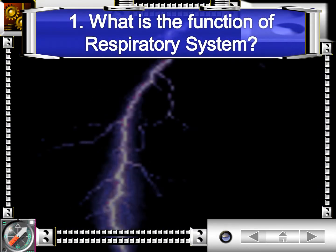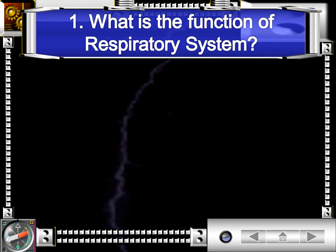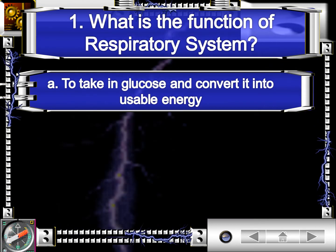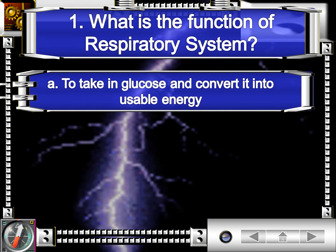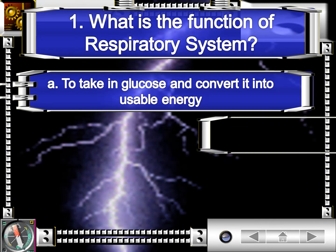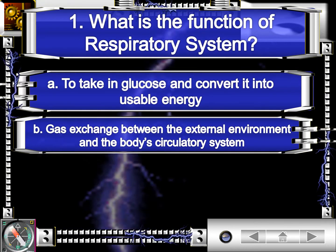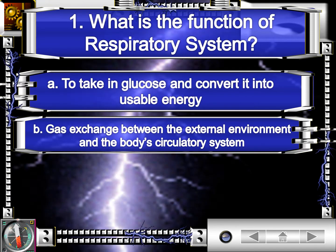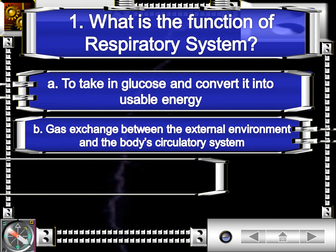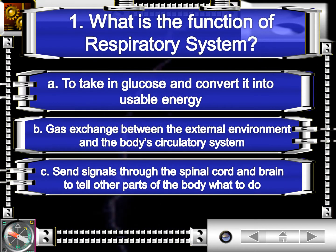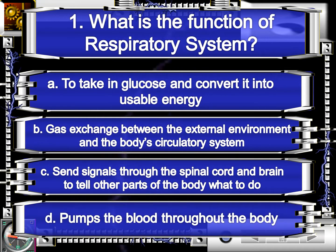Question number one. What is the function of the respiratory system? Is it letter A, to take in glucose and convert it into usable energy? Letter B, gas exchange between the external environment and the body's circulatory system. Letter C, send signals through the spinal cord and brain to tell other parts what to do. Or letter D, pumps the blood throughout the body.